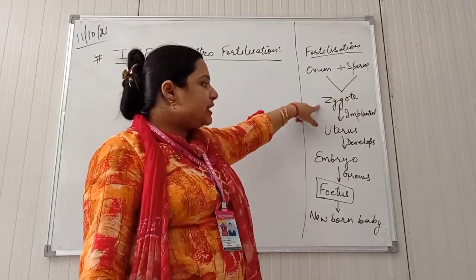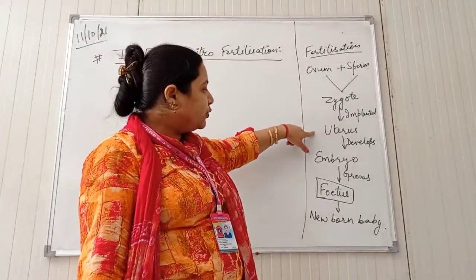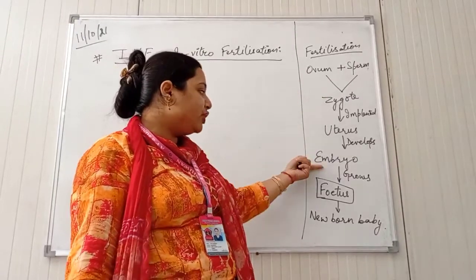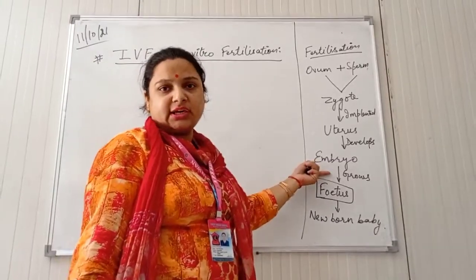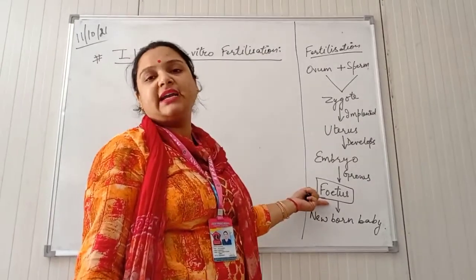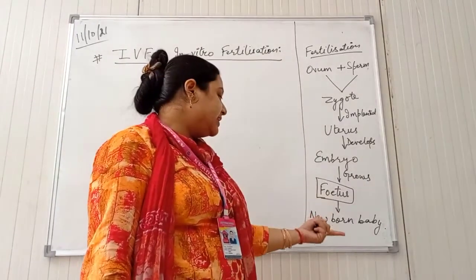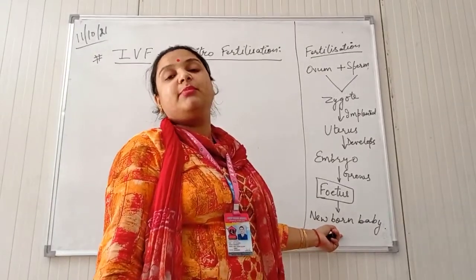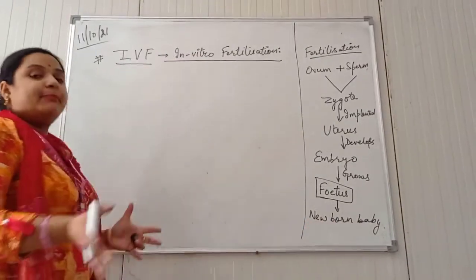Then the zygote is formed and implanted inside the uterus. The developmental stage comes up and an embryo is formed. That embryo grows further and forms a fetus residing inside the womb of the mother, and then that fetus grows and is born as a newborn baby.